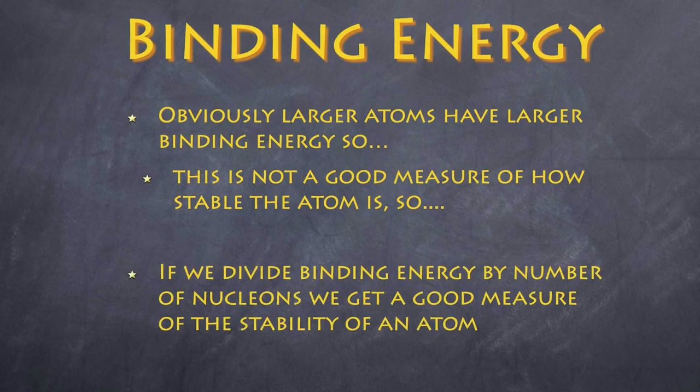And so what we're interested in is in the binding energy per nucleon. So we divide the total binding energy by the number of nucleons and that gives us a good measure of how stable an atom is.